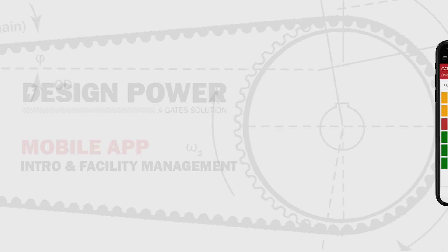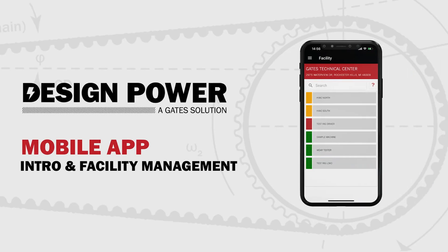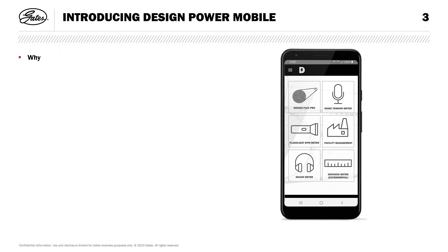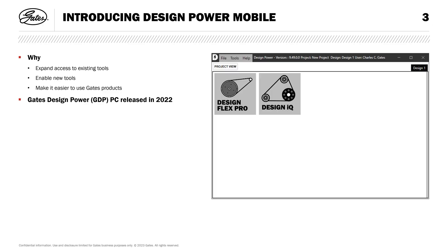Hi, my name is Gabe and I'm a Product Fatigue Engineer on Gates' Computer Aided Engineering Tools team. We're proud to present Gates Design Power Mobile. Gates Design Power, abbreviated GDP, was first released in 2022 for PC as the new home for all Gates' belt drive engineering tools.